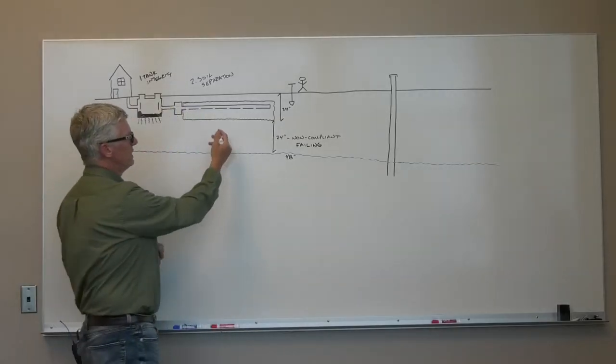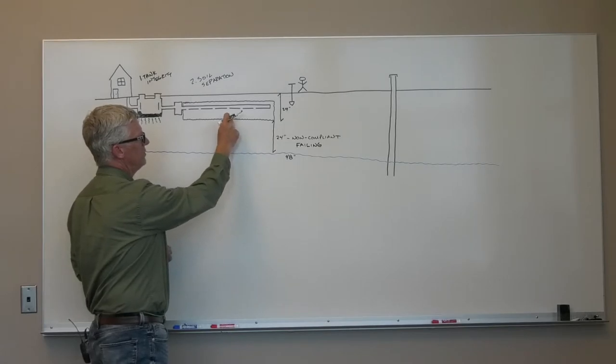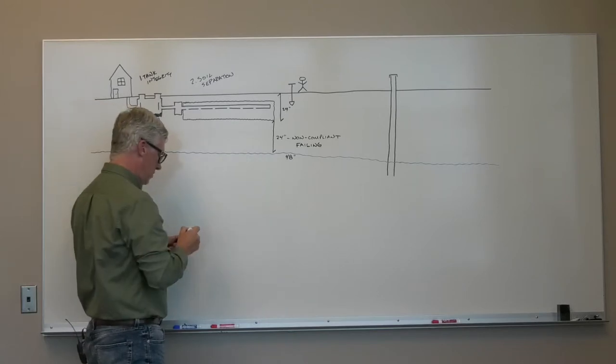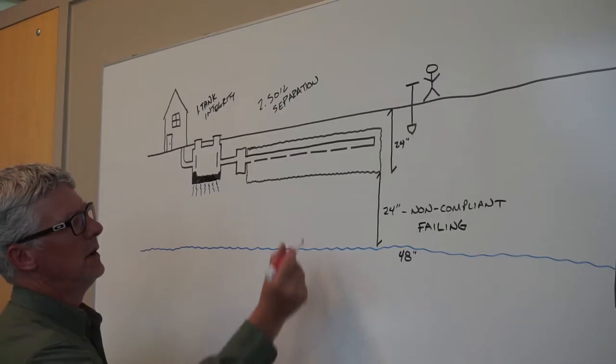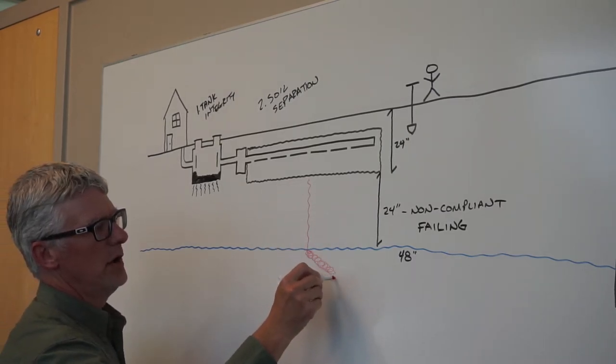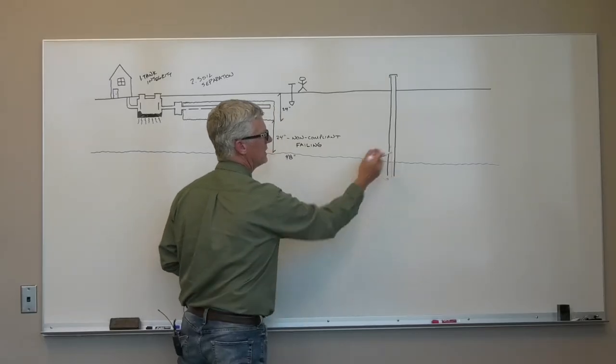Because as the effluent leaves the drain field, there's not enough contact time between when the effluent leaves the bottom of the drain field and the water table. And you'll get untreated sewage getting into the groundwater, contaminating the groundwater and could eventually end up in someone's drinking water well and could get somebody sick.